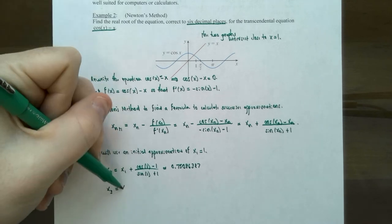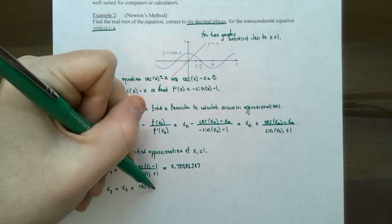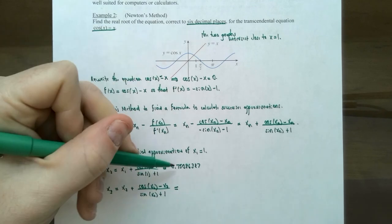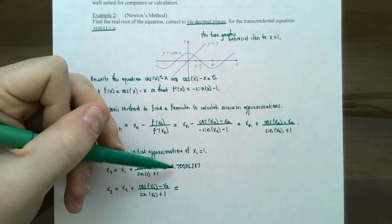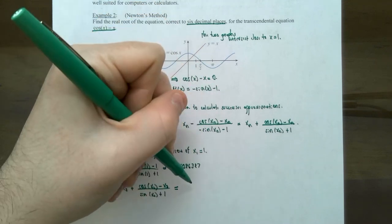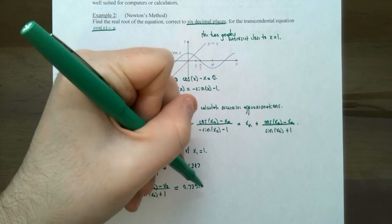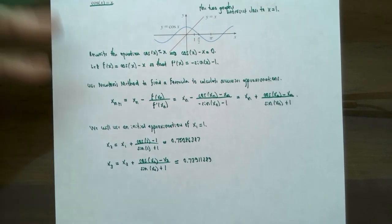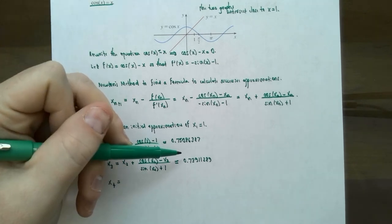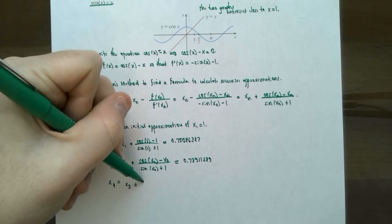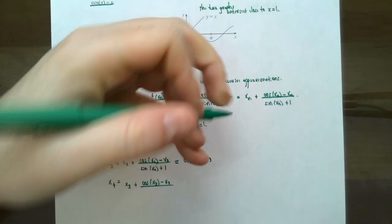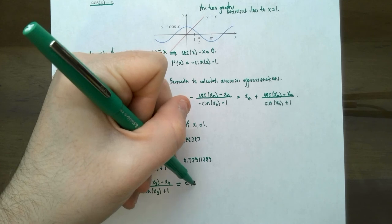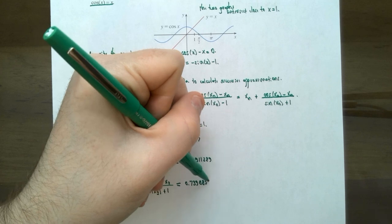Now we calculate x₃: x₂ plus cosine(x₂) minus x₂ divided by sine(x₂) plus 1. Substituting in x₂, keeping in mind that more decimal places kept means a more accurate next approximation, x₃ is approximately 0.73911289. We want to keep eight decimal places to compare. Then x₄ equals x₃ plus cosine(x₃) minus x₃ divided by sine(x₃) plus 1, which is approximately 0.73908513.